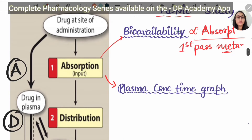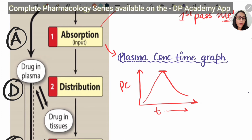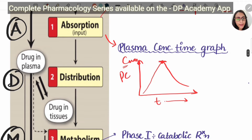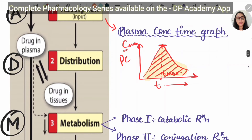In absorption, we have the plasma concentration-time graph, plotted between plasma concentration (y-axis) and time (x-axis). The highest point on the y-axis is C max — the maximum plasma concentration obtained. When we take the corresponding point on the x-axis, that is T max — the time required to reach the maximum plasma concentration. T max tells about the rate of absorption, and the area under the curve is the extent of absorption.